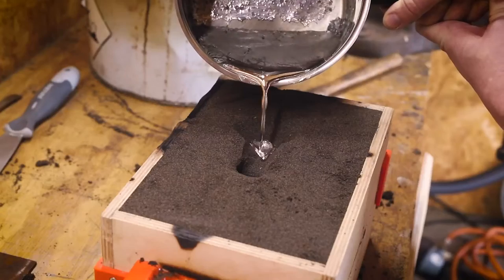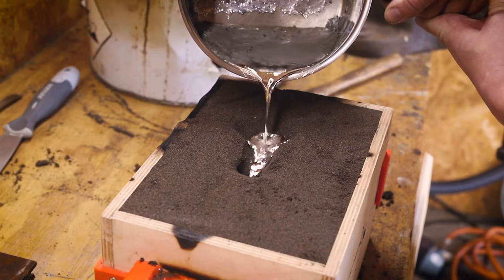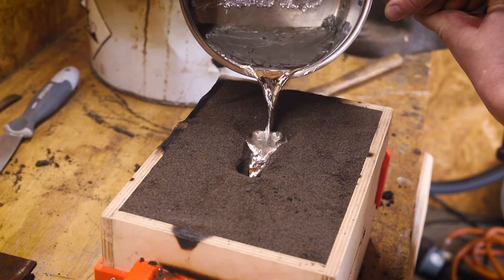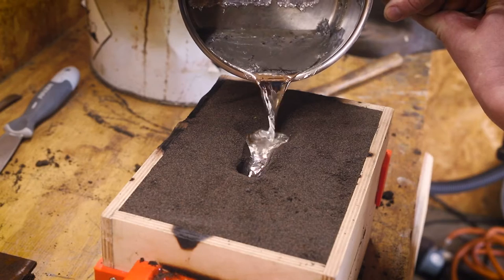Now we're ready to pour the molten tin into the mold, which is a much more comfortable experience compared to pouring molten copper at 1000 degrees.